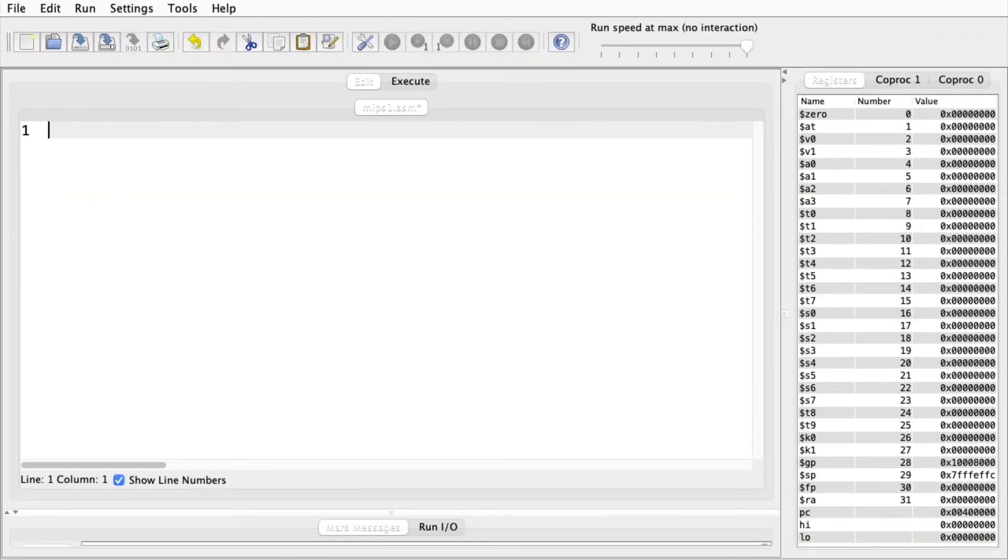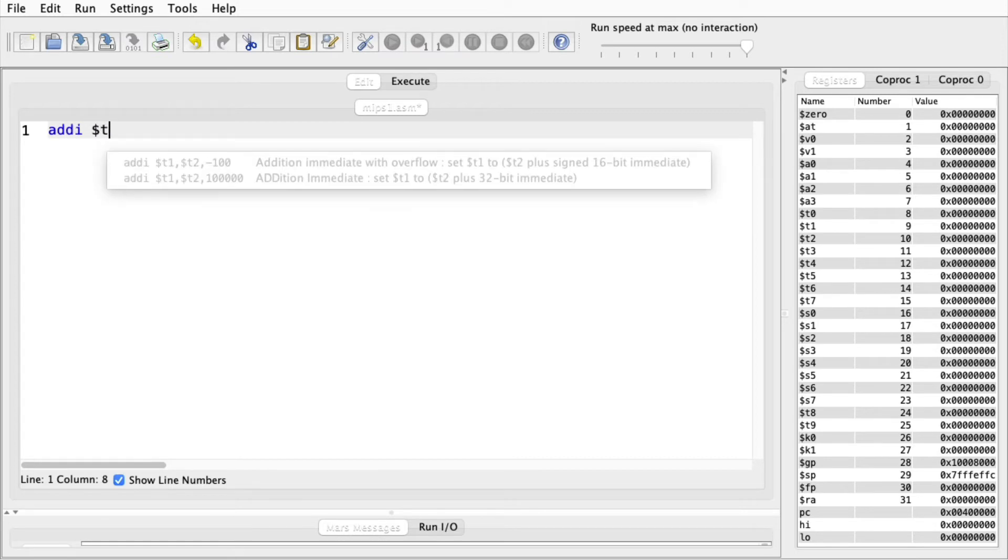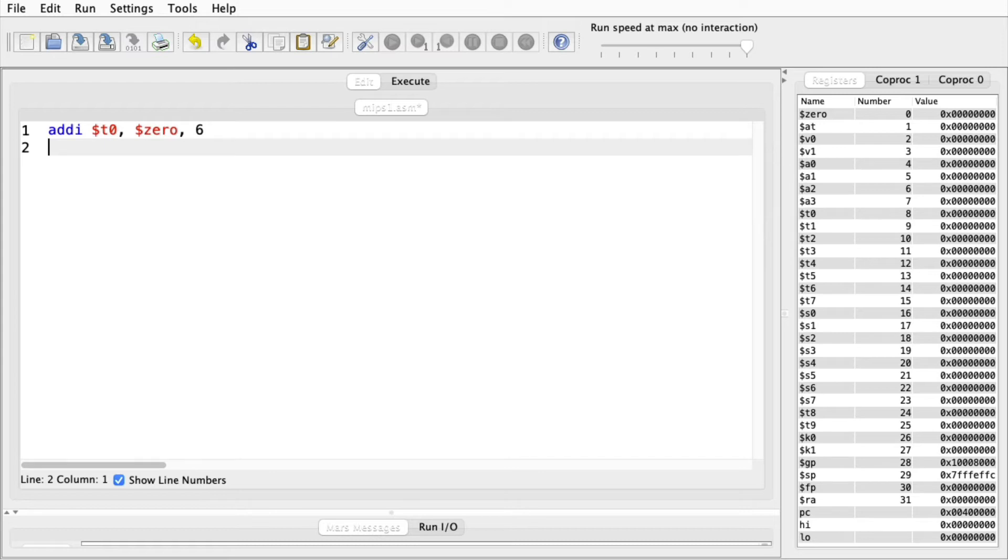Consider, for example, setting a register to a value. When introducing assembly, I did this using an addEye instruction, specifically adding the desired literal value to the zero register. However, if you're reading or writing a lot of code, it's nice to have a shortcut that more directly and concisely conveys the same idea. That's why MIPS has the load immediate pseudo-instruction. Instead of having to type out the full addEye instruction, I can load 6 into T0 this way.